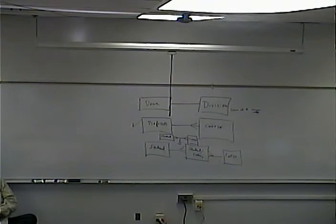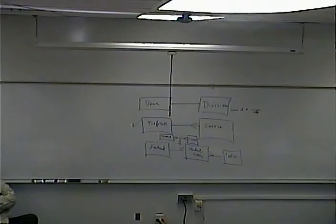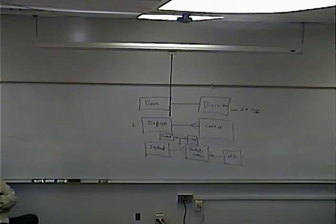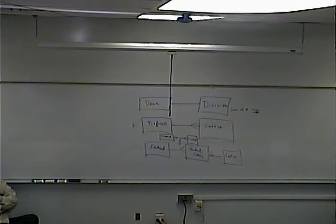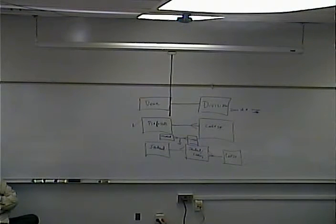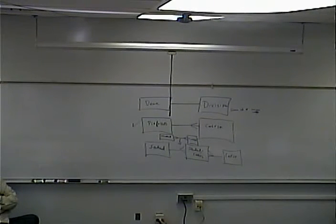So you make a unique index. The unique part means each member of the index has to have a distinct, unique value. In other words, I could not then have dean number one be dean of both engineering and math and sciences — when I tried to insert the second one, the database would complain and not let me enter that. That's what a unique index is.